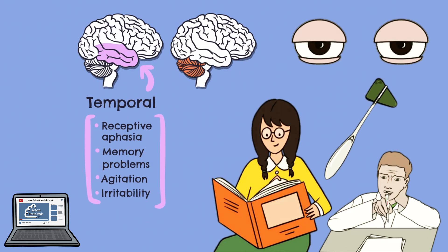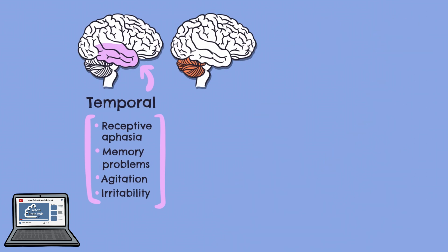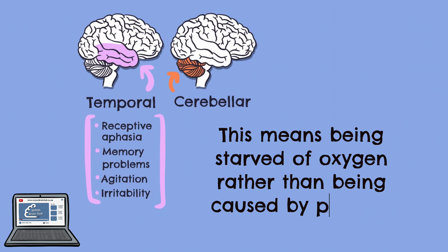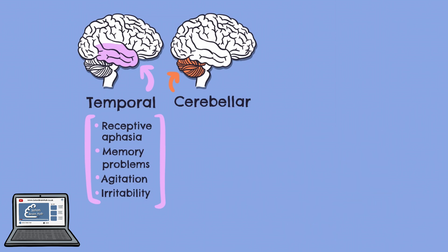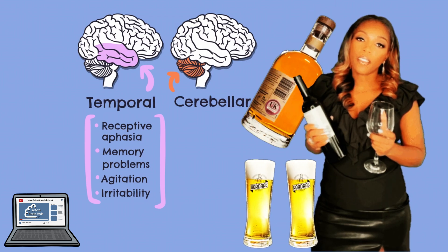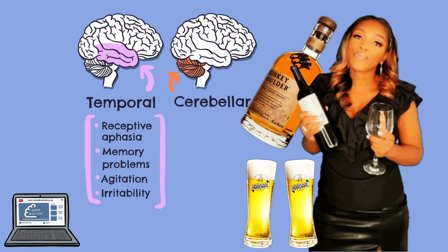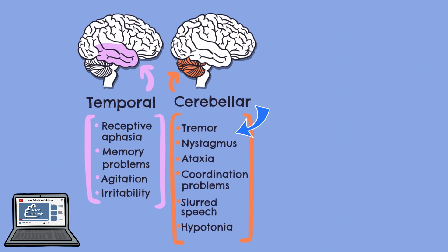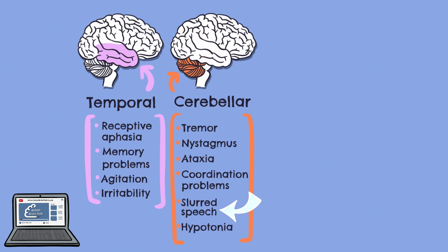Although cerebellar brain damage is relatively rare, its effects can be quite serious. Because of its location, it remains fairly protected from external forces, so damage often occurs due to anoxic brain injury, neurodegenerative disorders or infection. Alcohol abuse can also cause the cerebellum to deteriorate. Cerebellar damage can result in tremors, nystagmus, ataxia, coordination problems, slurred speech and hypotonia.